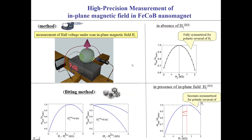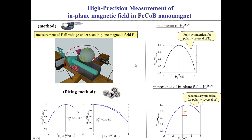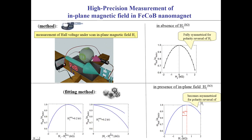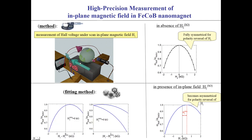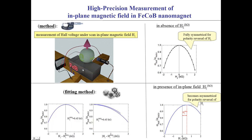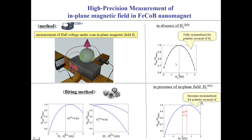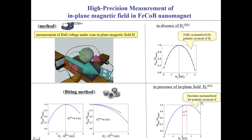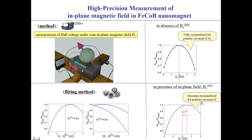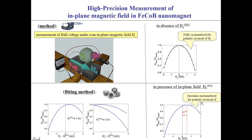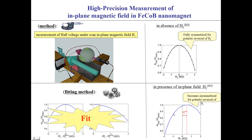This slide explains the proposed high-precision measurement method based on DC measurement of the Hall voltage. The Hall voltage is measured as a function of a scanned external in-plane magnetic field. As the external in-plane magnetic field is applied, the magnetization turns towards the field and the Hall voltage is reduced. It is critically important that the data is absolutely symmetrical for polarity reversal of the scanned field. Iron-cobalt-boron is an amorphous material with isotropic in-plane symmetry; only another source of magnetic field may break this symmetry.